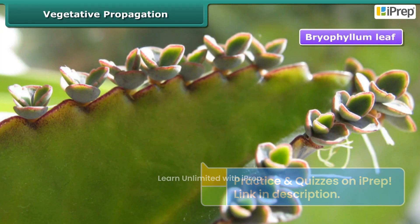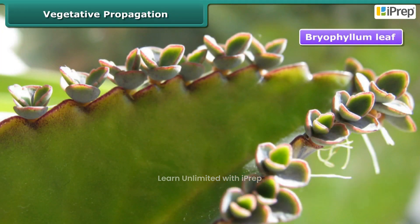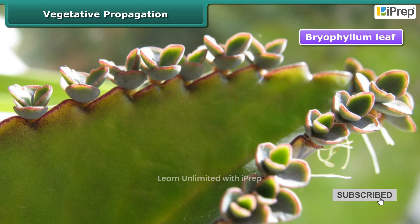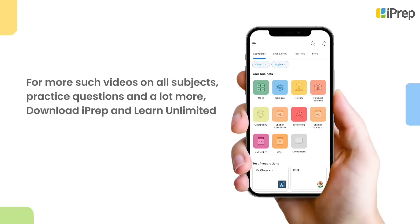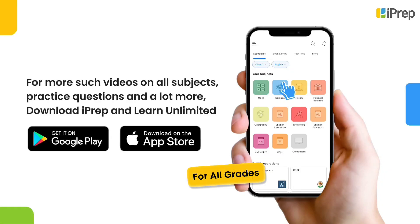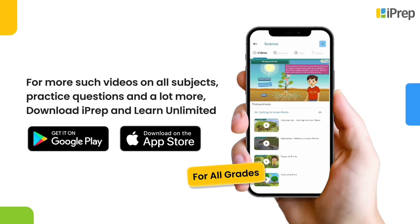Leaf is also a vegetative part of a plant. In plants like Bryophyllum, the leaf is the vegetative structure that helps in vegetative propagation. Many small buds arising at the margins of the leaves, under suitable conditions, form new plants.